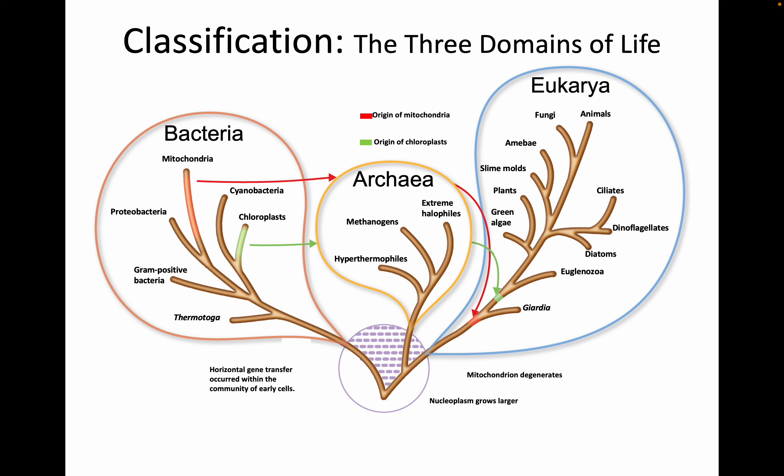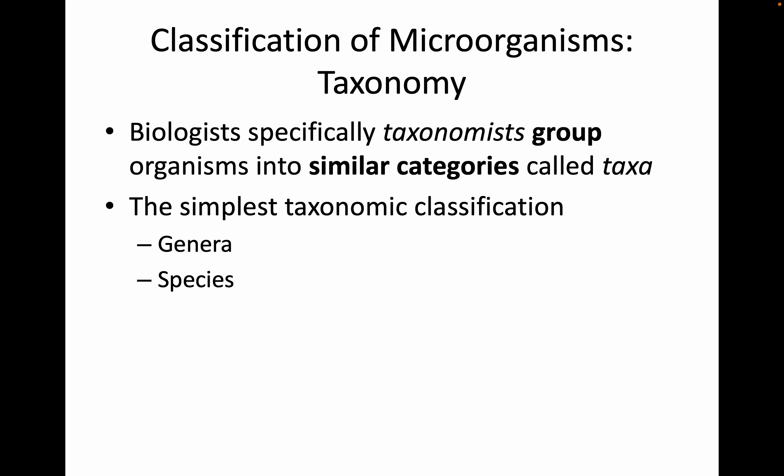Classification at our broadest scale has three domains of life — all living things fit in one of these three categories: they're either bacteria, archaea, or eukaryote. All life on earth shares a common ancestor. Biologists, specifically taxonomists, group organisms into similar categories called taxa.